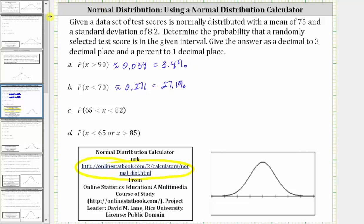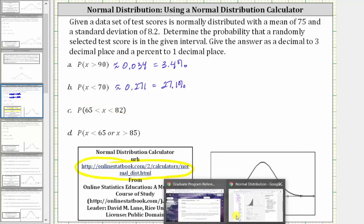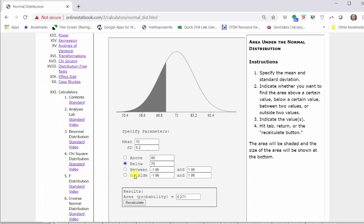Part C: we're asked to find the probability that X is greater than 65 and less than 82. To find this probability, we select between and enter the test scores of 65 and 82. And once again, press tab, return, or press recalculate.